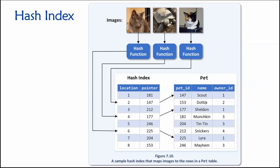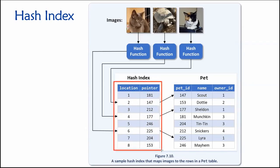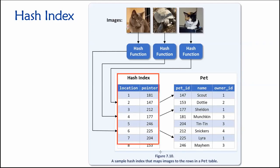The hash index kind of serves as a quick lookup table where you can take a complex object — like an image, a video, an MP3 file, a Word document, or a PDF — and have a way of quickly locating any of them inside a database table by running them initially through a hash function and using a hash index. So that's pretty cool.